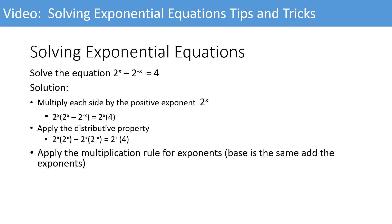Now we'll use the multiplication rule of exponents — because the base is the same — and we get 2 to the exponent x plus x, which is 2x, minus 2 to the exponent 0 (because x plus negative x is 0), equals 2 to the exponent x times 4. Continuing on: 2 to the exponent 2x minus 1 is equal to 2 to the exponent x times 4.